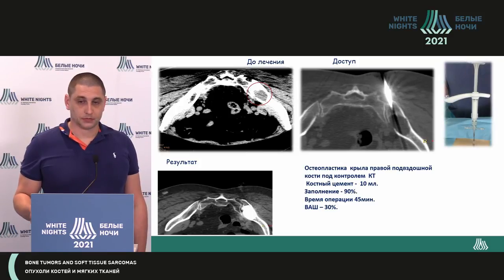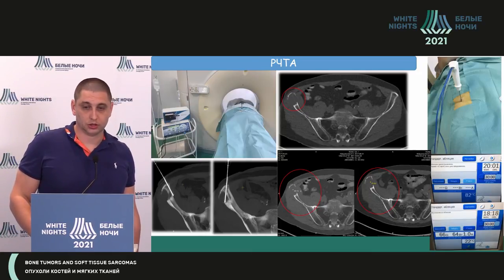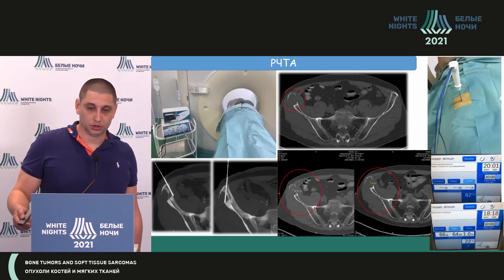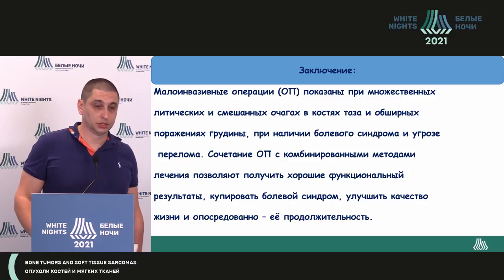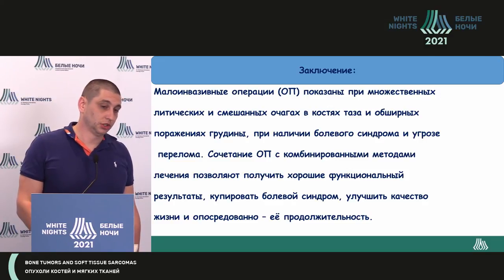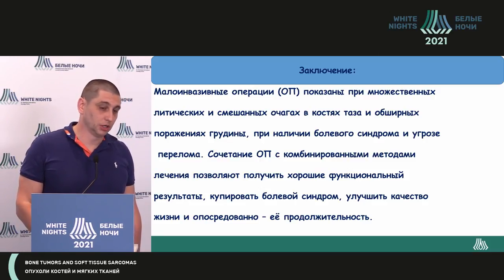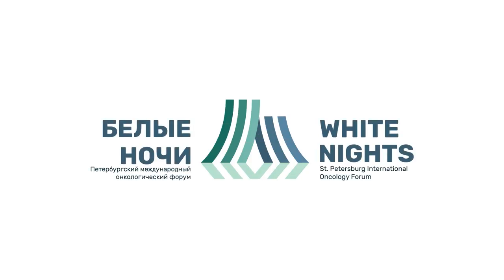This shows the approach to the iliac bone. The temperature mode was up to 80 degrees. In conclusion, MIS surgery is indicated for mixed type of lesions in the pelvis and thoracic bones. It improves pain and quality of life, as well as lifespan of our patients. Our follow-up period was up to 72 months, and the key finding is that not only in the post-operative period, but throughout all 72 months, we had significant improvement in patients' condition.